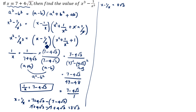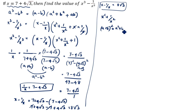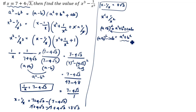Now we need the value of x square plus 1 by x square plus 1. Using the identity: (a plus b) whole square equals a square plus b square plus 2ab, we get a square plus b square equals (a plus b) whole square minus 2ab. So x square plus 1 by x square equals (x plus 1 by x) whole square minus 2 into x into 1 by x. The x's cancel, so x square plus 1 by x square equals (x plus 1 by x) whole square minus 2.